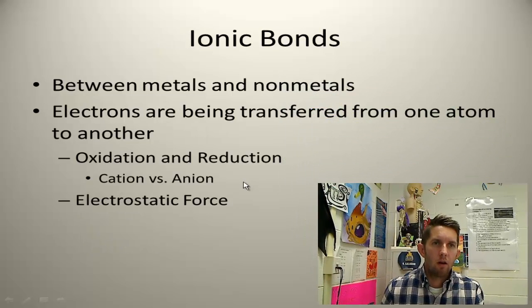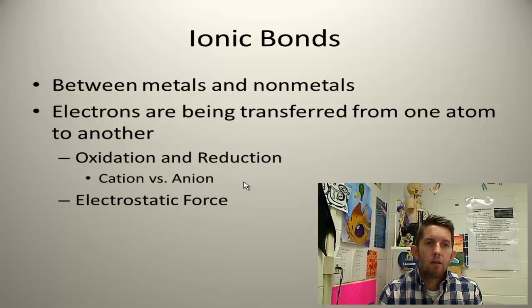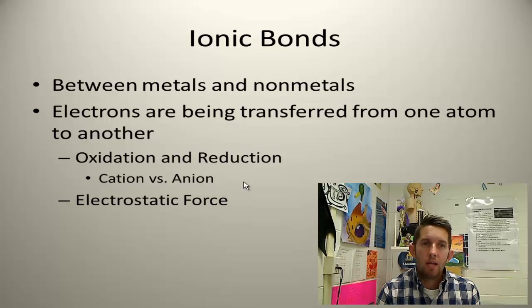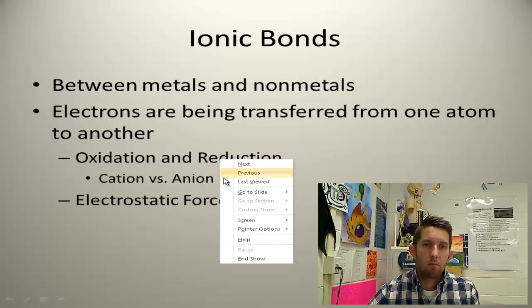Ionic bonds are between metals and non-metals. Thinking about the periodic table, metals are on the left and non-metals are on the right. In ionic bonding, electrons are being transferred from one atom to another — they're changing hands. This involves oxidation versus reduction. The atom gaining electrons has its charge reduced; the atom losing the electron is oxidized. When oxidation and reduction happen simultaneously, we call this a redox reaction.